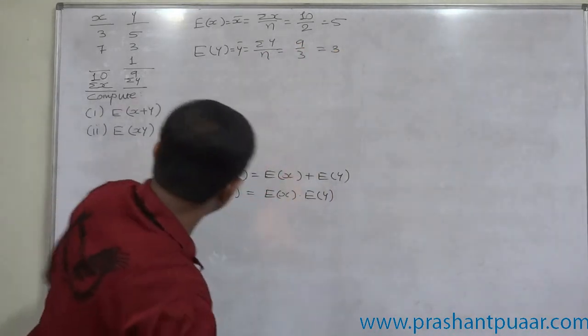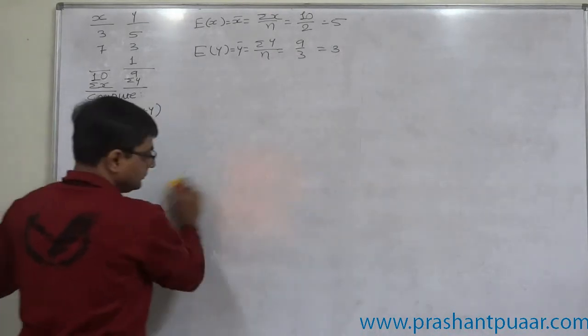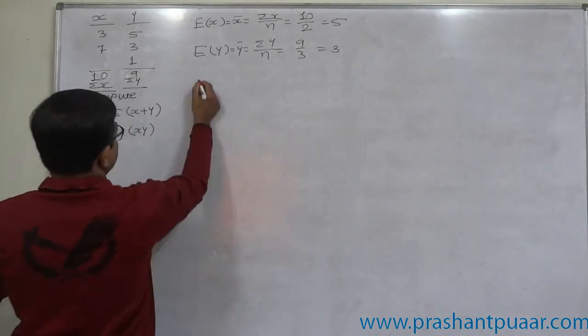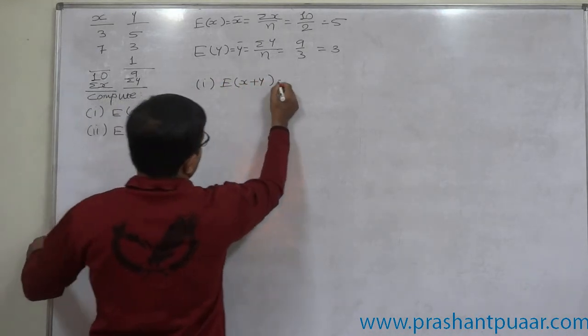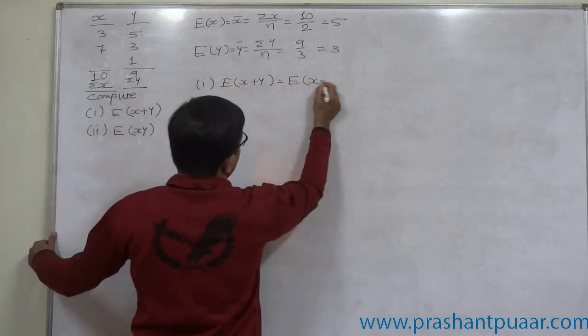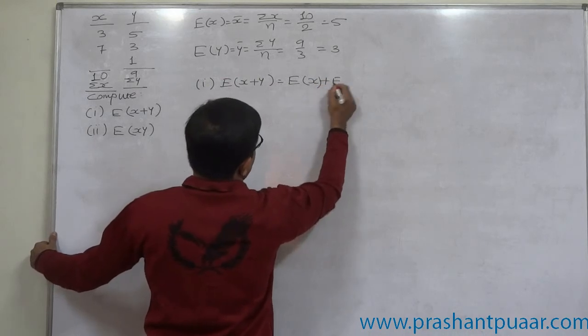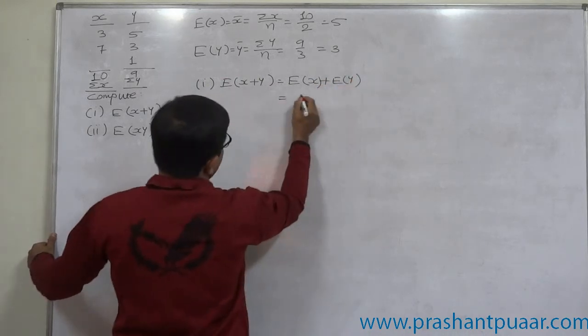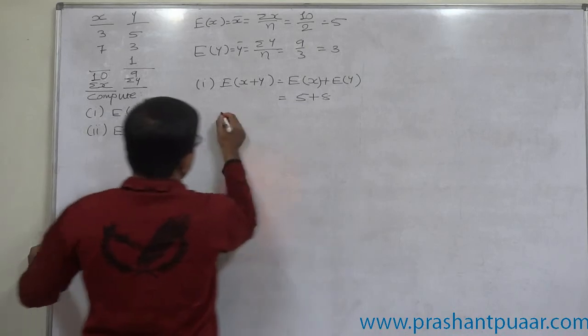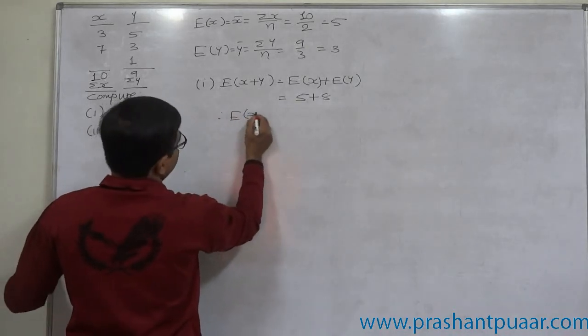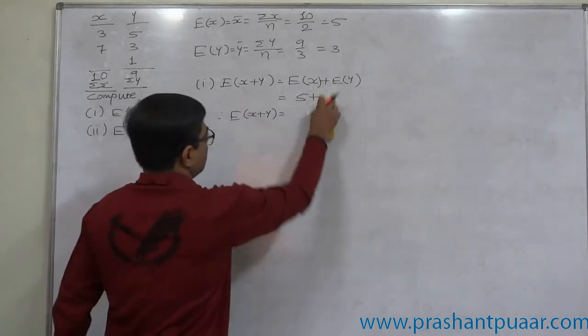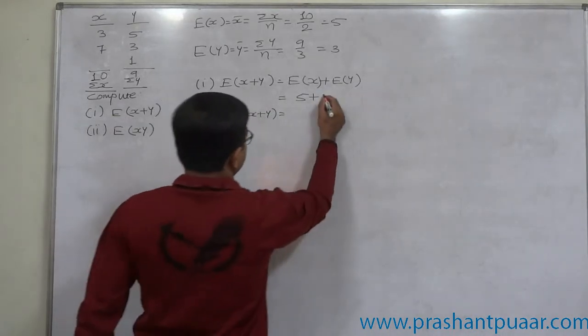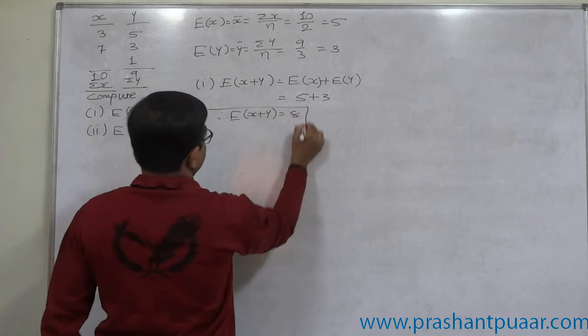Now we can calculate these two. First is E of x plus y that is E of x plus E of y. So it is 5 plus 3. That means in this case E of x plus y comes to 5 plus 3 would be 8 and the result is 8. Yes, this is first answer.